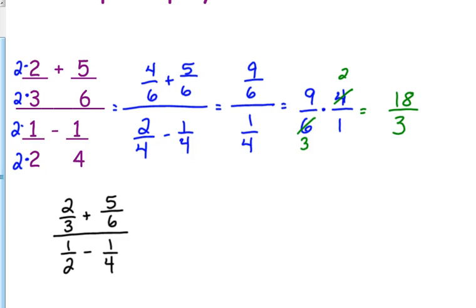This time, though, instead of getting a common denominator on the top and a common denominator on the bottom, what I'm going to do is I'm going to look at all of the denominators together and say, what would be my least common denominator between 3, 6, 2, and 4? 12. Okay.